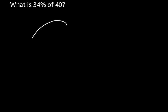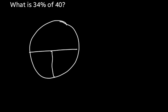A simple question: what is 34% of 40? To solve this, I'll first make my PBR circle — portion on top, base in the bottom left, rate in the bottom right. Looking at this question, I see two numbers: 34% and 40. The 34% is the rate because all percentages are going to be your rate.